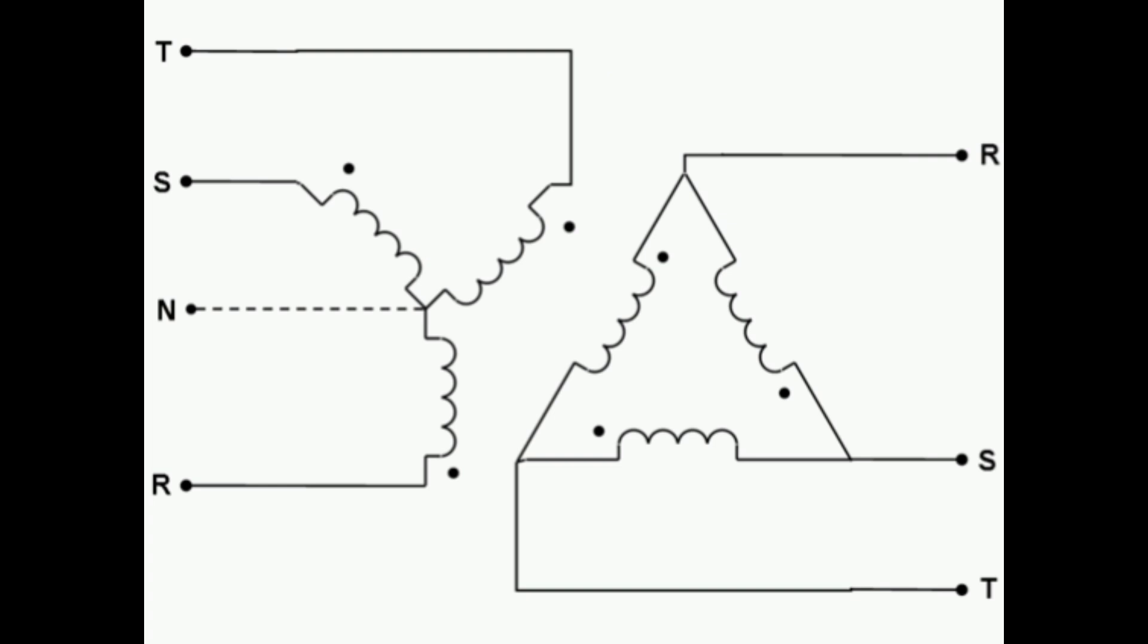Some advantages of delta configuration: one is simplicity in connection, as delta-connected transformers have fewer winding turns compared to Y-connected transformers for the same voltage ratings, making them compact and less expensive to manufacture. The second is higher fault tolerance. It can withstand single-phase faults, for example short circuit, in one winding without affecting the other windings, making them suitable for applications where fault tolerance is important.